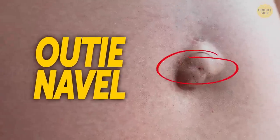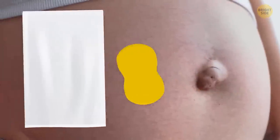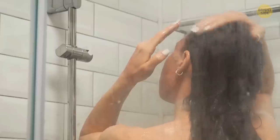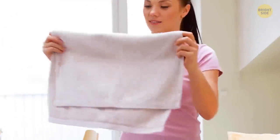If you have an outie navel, things are a lot easier. Get some soap onto a cloth, lather it up, and rub the soapy cloth onto your belly button. Rinse it under the shower and let the towel do the drying job.